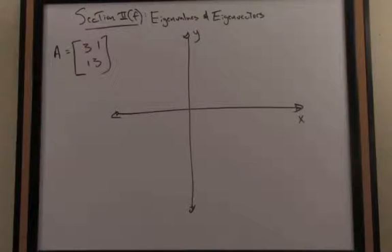I'd like to shed a little more light on this idea of eigenvalues and eigenvectors now from a geometric perspective. So we'll continue with the example where we call the matrix A this 2x2 matrix [3, 1; 1, 3].